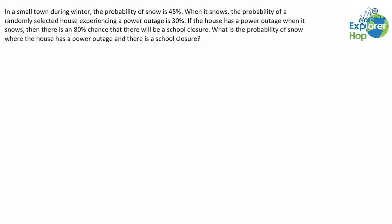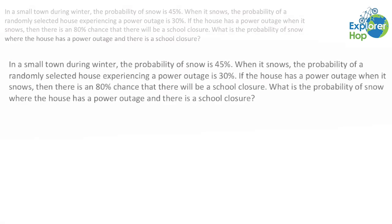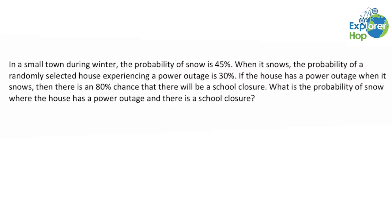Hello everyone, welcome to ExploreHop. So for this example, we're told that in a small town during winter, the probability of snow is 45%. When it snows, the probability of a randomly selected house experiencing a power outage is 30%. If the house has a power outage when it snows, then there is an 80% chance that there will be a school closure. What is the probability of snow where the house has a power outage and there is a school closure?